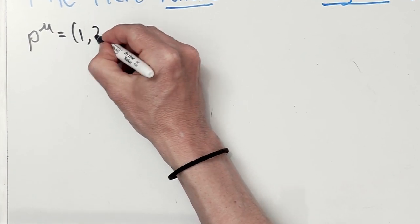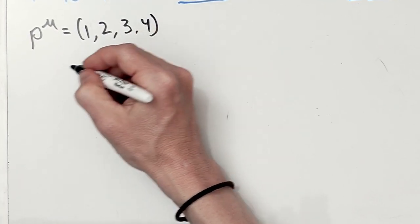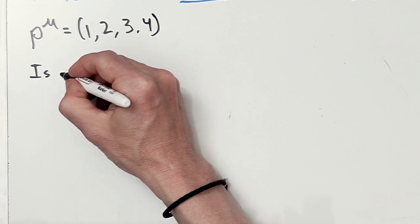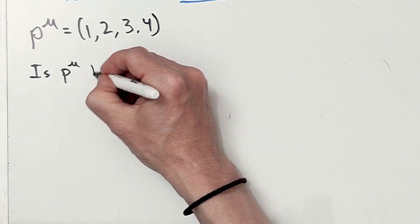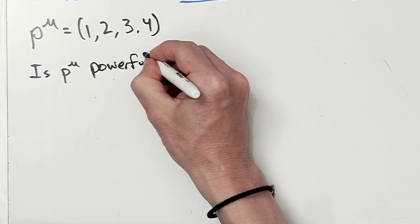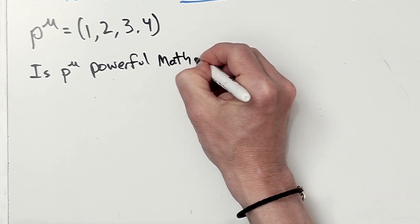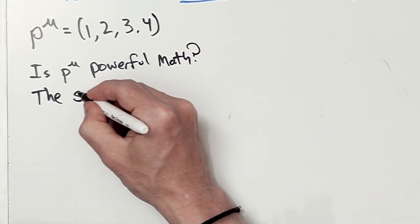So events in space time are done with four vectors, and I'm just making one up here: (1, 2, 3, 4). Now is four vector technology, is that powerful math? It's certainly common math.